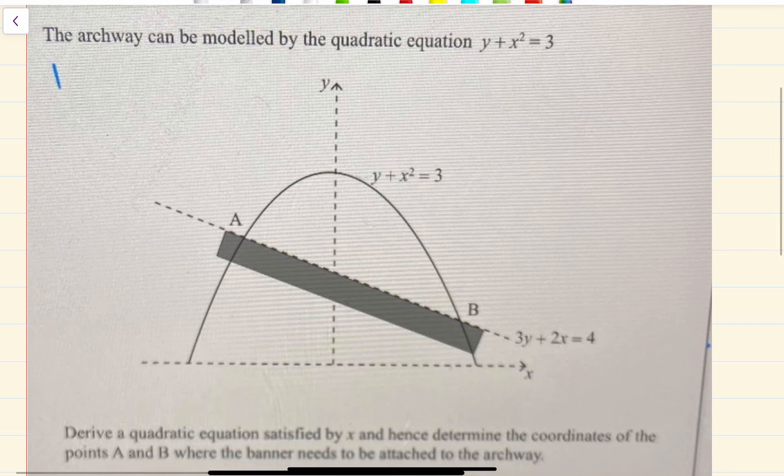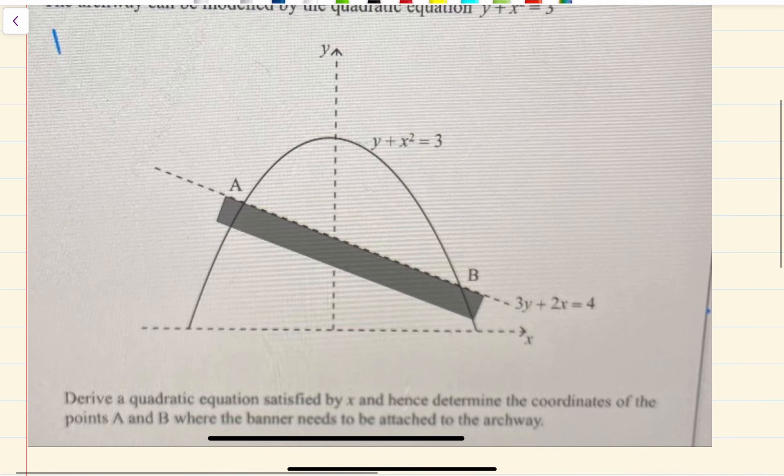So you can see there we have the diagram. The question says, derive a quadratic equation satisfied by x and hence determine the coordinates of the points A and B where the banner needs to be attached.